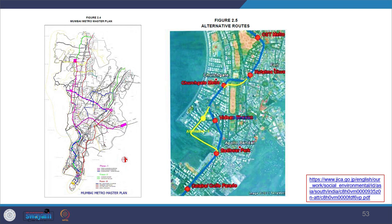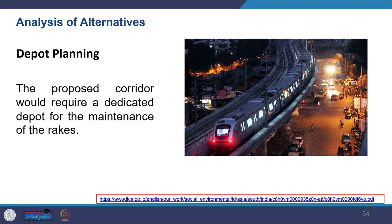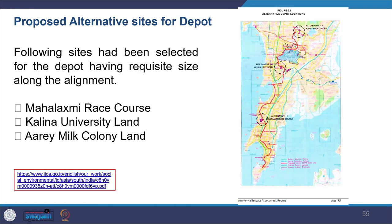Another alternative analyzed was depot planning. The project needed a dedicated depot for maintenance of the rakes. Alternative sites proposed included Mahalakshmi Race Course, Kalina University land, and R.A. Mill Colony. The project description confirms that the depot will finally be built at R.A. Mill Colony.